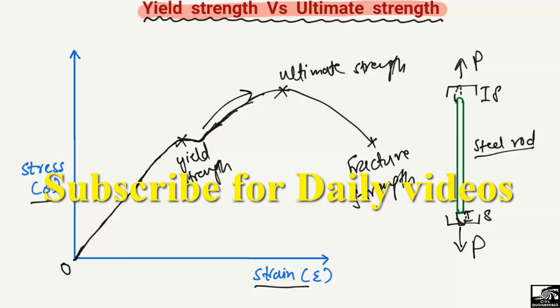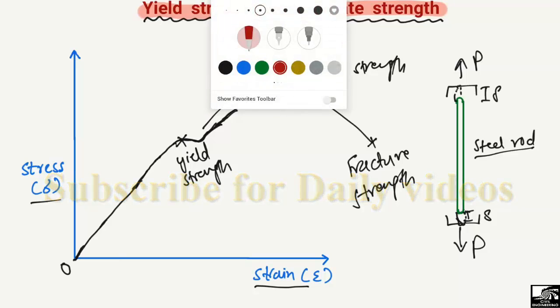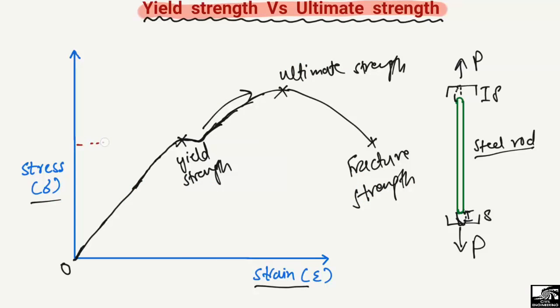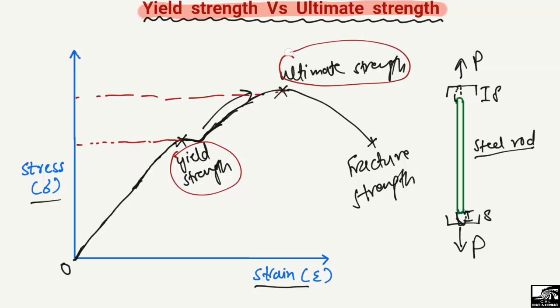In design, we always use the yield strength value — we do not use the ultimate strength value. The gap between the yield strength and the ultimate strength serves as our factor of safety in design.